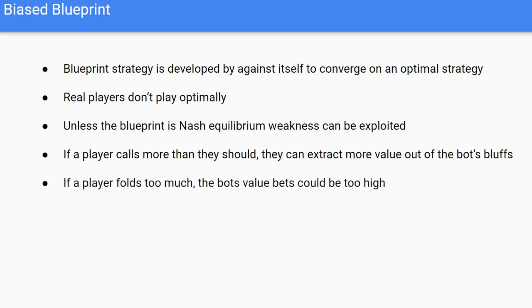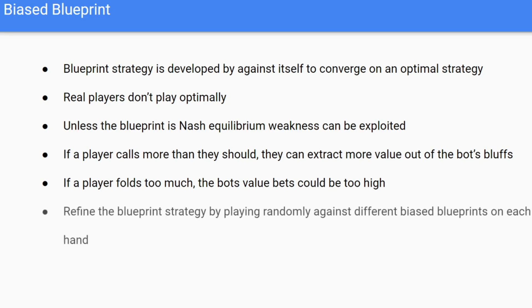Also, if they fold too much, our value bets could be potentially too high. To deal with this, we're going to play against a biased blueprint — randomly selecting a different kind of player to play against on each iteration and refining our blueprint based on that, making us more robust to various strategies.